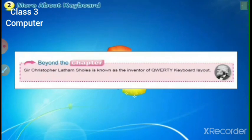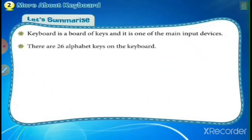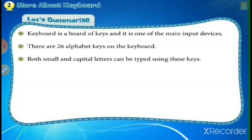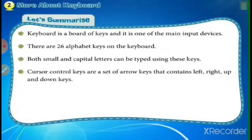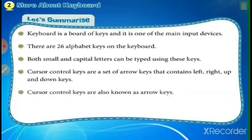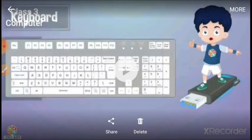Christopher Latham Sholes is known as the inventor of the QWERTY keyboard. A keyboard is a board of keys and is one of the main input devices. There are 26 alphabet keys on the keyboard; both small and capital letters can be typed using these keys. Cursor control keys are a set of arrow keys containing left, right, up, and down keys, also known as arrow keys. Function keys on the top row go from F1 to F12. Goodbye students, have a good day!